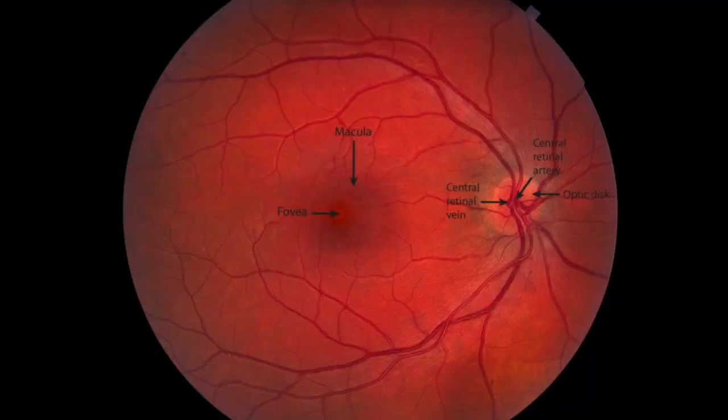Now let's focus on the posterior aspect of the eye involving the retina, macula, and fovea. The retina is light-sensitive tissue which is highly vascularized and is an extension of the central nervous system. Near the center of the retina is a yellow oval region called the macula, responsible for sharp and clear central vision. Within the macula is a small depression called the fovea where visual acuity is the highest. Macula and fovea are responsible for central vision, while the retina is responsible for peripheral vision.